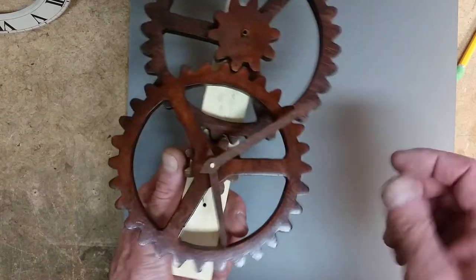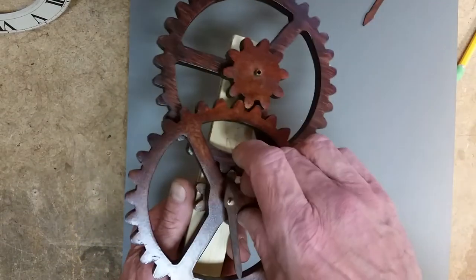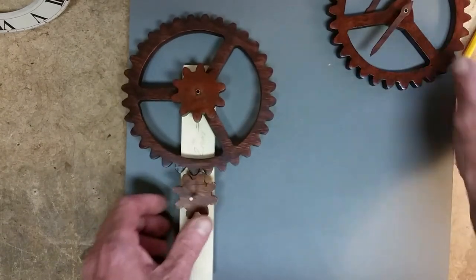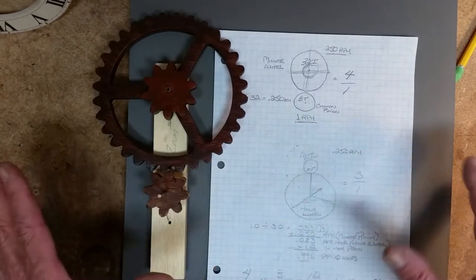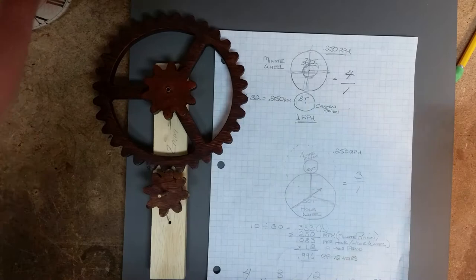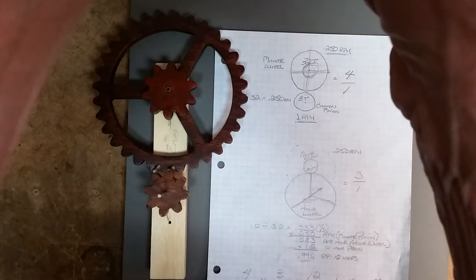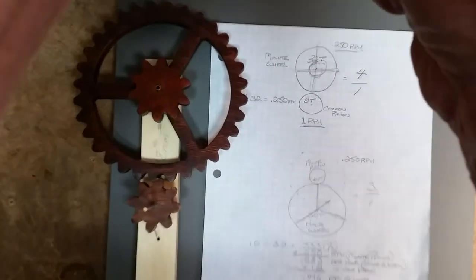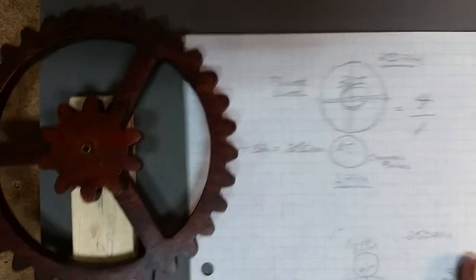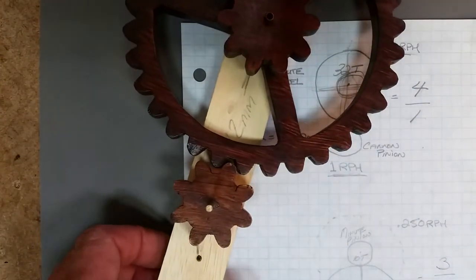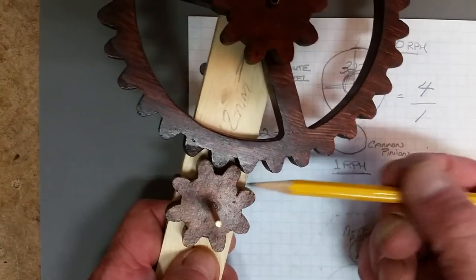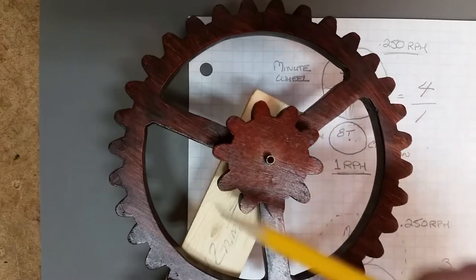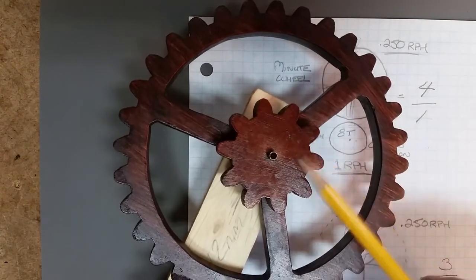Let's look at the math of this thing. Let's take it apart again and we're going to look at the gear ratios and the speeds. Let me lower the camera down. This cannon pinion has eight teeth and this minute wheel here has 32 teeth. We're not concerned about this minute pinion right now.